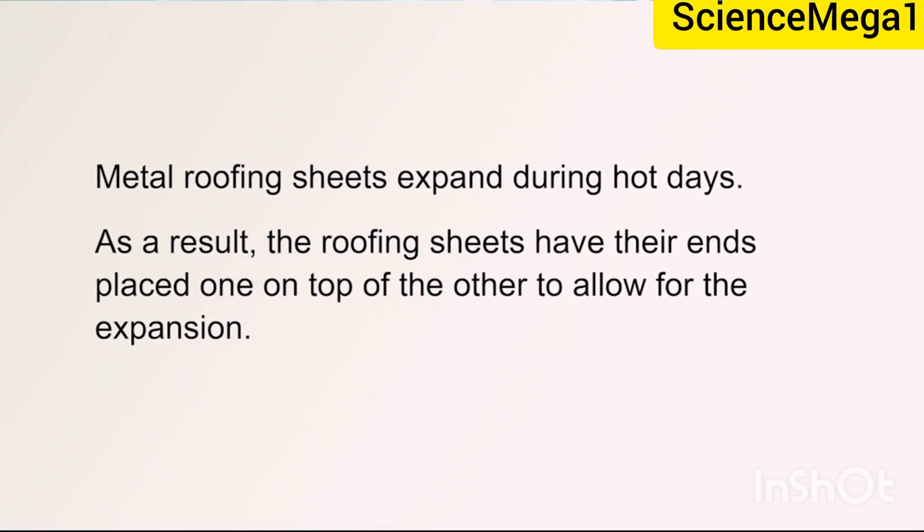Metal roofing sheets expand during hot days. As a result, the roofing sheets have their ends placed on top of the other to allow for the expansion. So that is why roofing sheets are arranged with one end placed on the top of the other end.